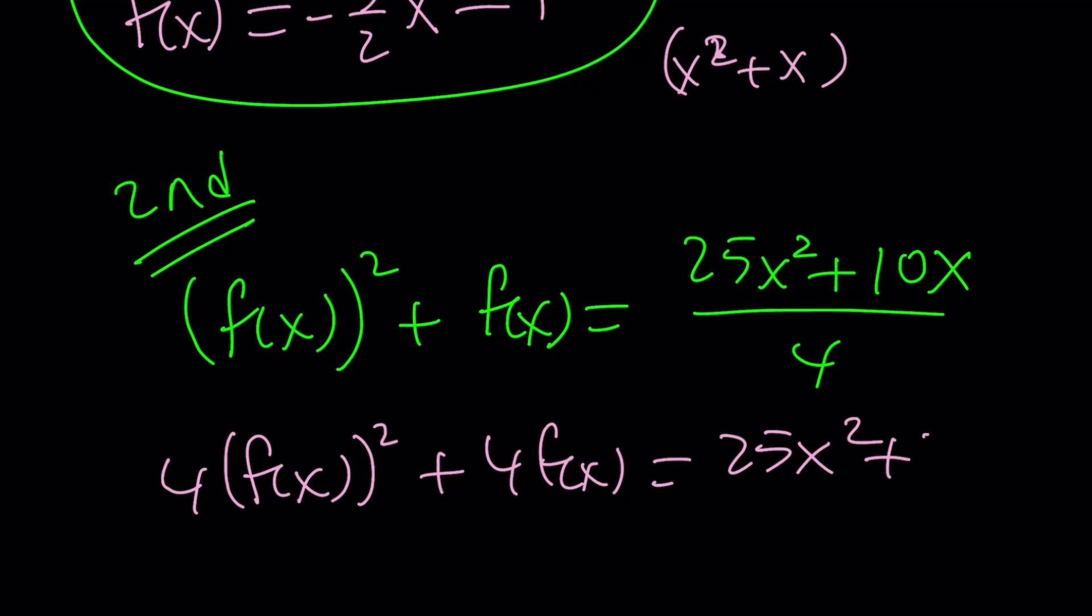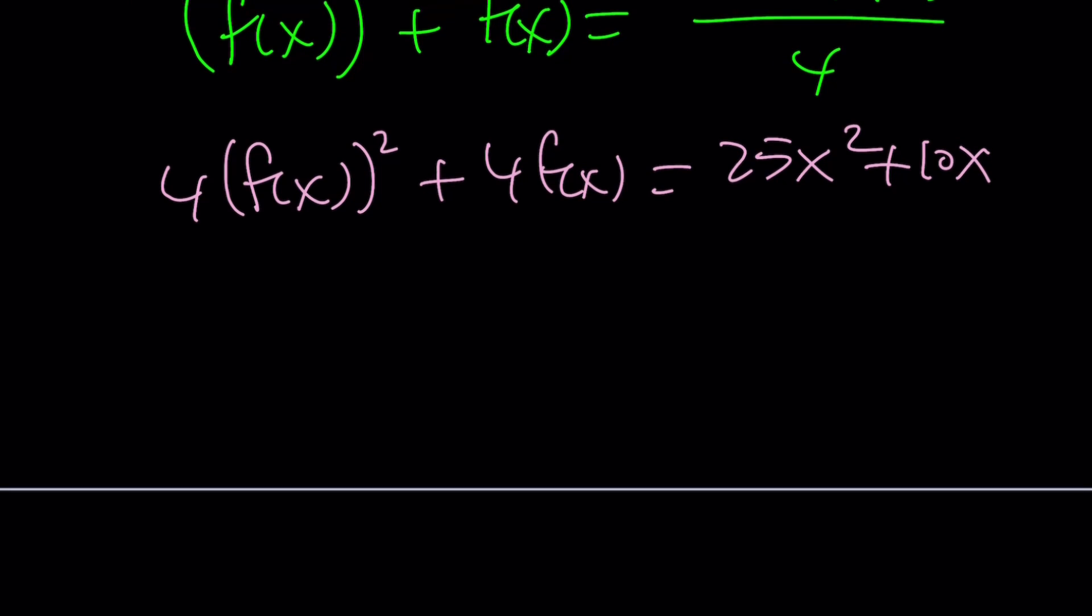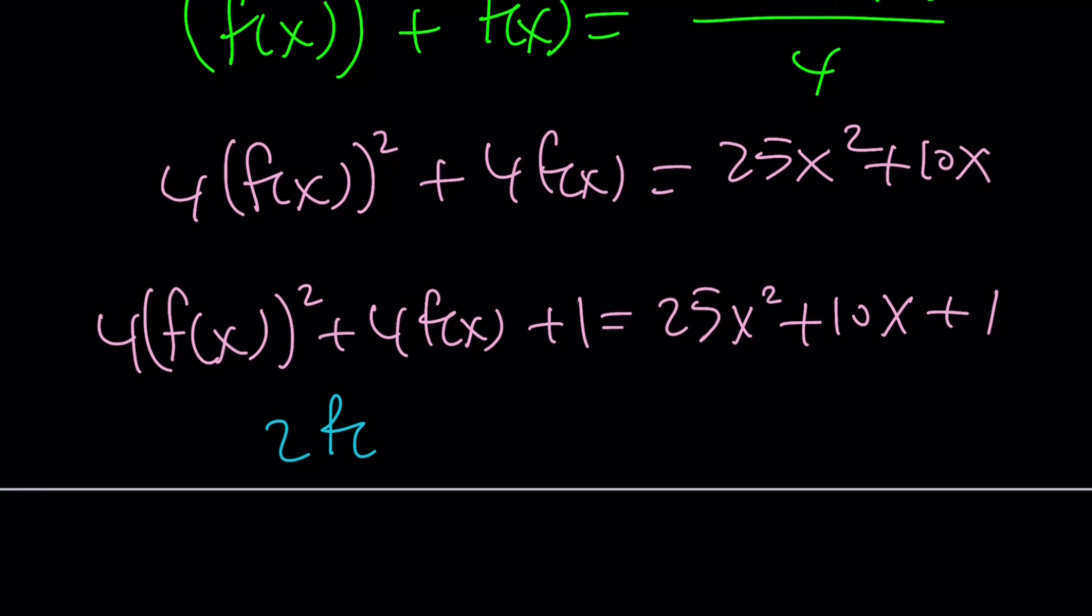And now, these things will be really good because left-hand side just needs a 1 to become a perfect square. And that's just perfect. I love perfect squares because they are perfect. Nobody is perfect anyways. That's a different story. But now, look at this. Not only the left-hand side becomes a perfect square, the right-hand side also becomes 1. Isn't that awesome? And now, we get (2f(x)+1)² = (5x+1)².